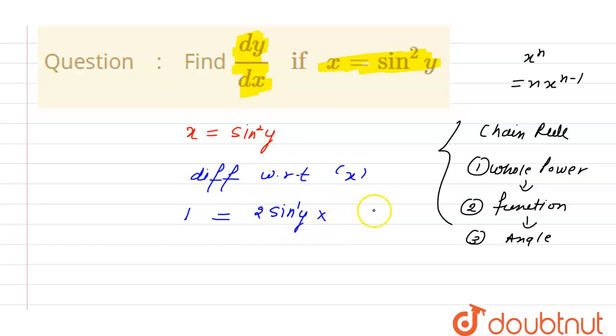Differentiation of function then. Differentiation of sin theta is cos theta. Theta is y here. Differentiation of y. Angle is y. Y with respect to x will be dy divided by dx.